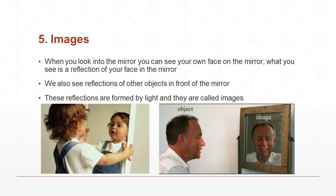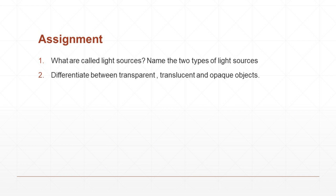Now for the assignment. Two questions are given. Question one: what are called light sources? Name the two types of light sources. Question two: differentiate between transparent, translucent, and opaque objects. Write the assignment in your notebook.